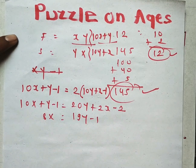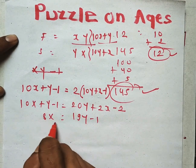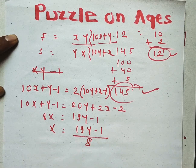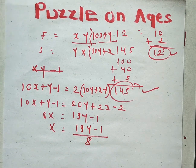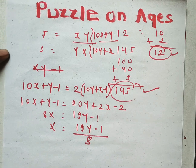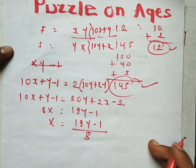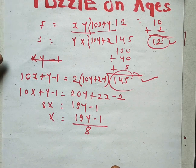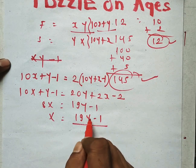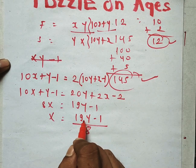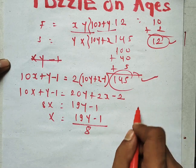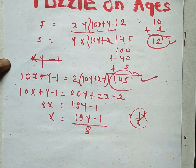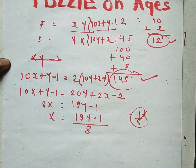So we solve: 10x plus y minus 1 equals 20y plus 2x minus 2. This gives us 8x equals 19y minus 1, so x equals (19y minus 1) divided by 8. We know x and y are digits, so they cannot be fractions. We check by trial and error — if y equals 0, we get negative, not possible.